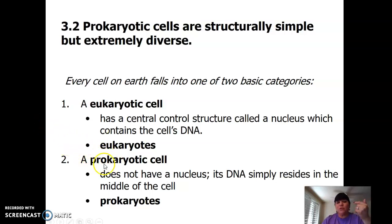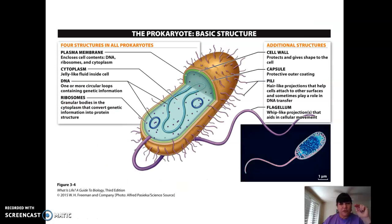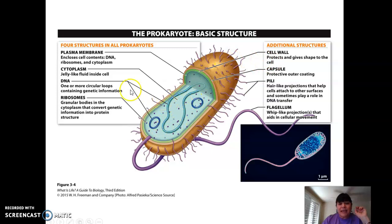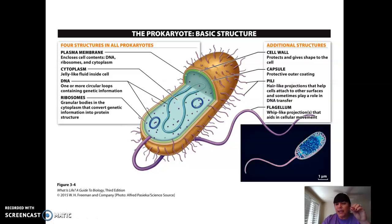Bacteria are prokaryotic. Plants and animals are eukaryotic, and we're going to look at both in the lab. Here's an example of a prokaryotic cell — a bacterium. They have a cell membrane and a cell wall, just like plant cells do. They do have DNA, but the DNA is not enclosed in a nucleus. These types of cells are super, super tiny. Think ancient bacteria when you think of prokaryotic cells.